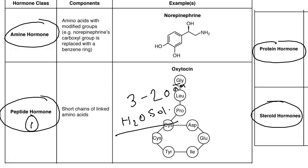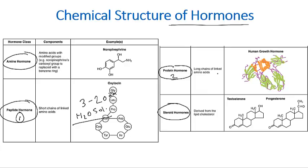Protein hormones are very similar to peptide hormones, but the difference is that protein hormones have a larger chain of amino acids — more than 20 to 25, 30, or even 50 amino acids long. Otherwise their composition and properties are more or less the same. An example of a short-chain peptide hormone is oxytocin, while examples of protein hormones include human growth hormone and insulin.